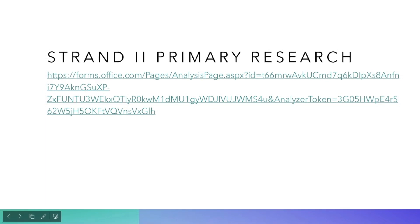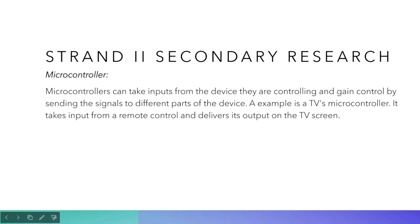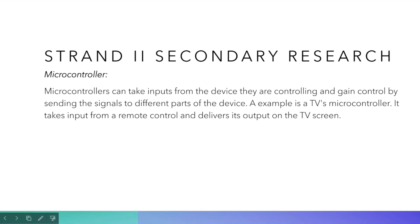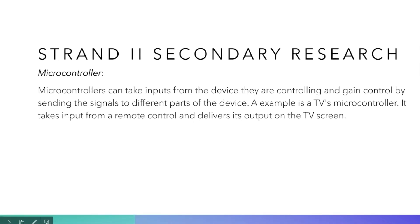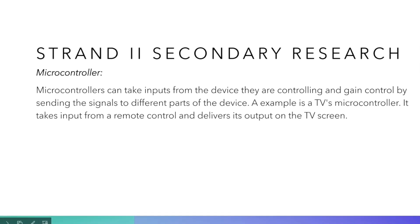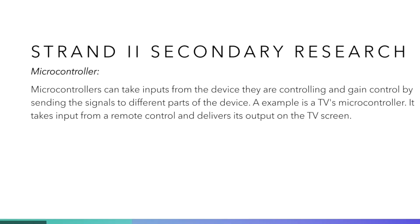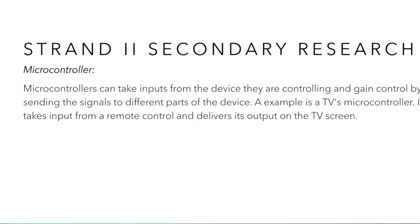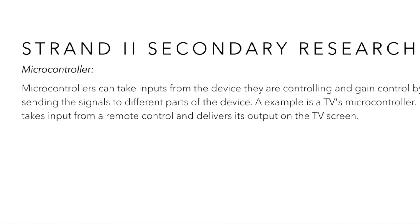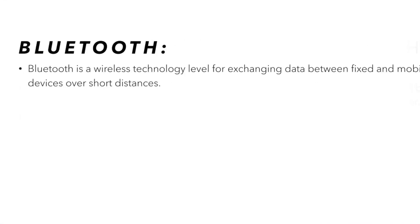Criteria A, strand 2. We had to do primary research and secondary research. In primary research, we conducted a survey of people to ask about the features of the robot. Then in secondary research, we were given a few things to research on, like microcontrollers. Microcontrollers can take input from the device, then gain control by sending signals to different parts of the device.